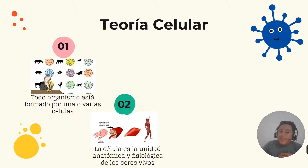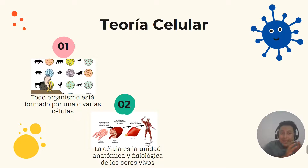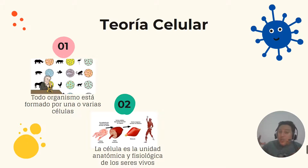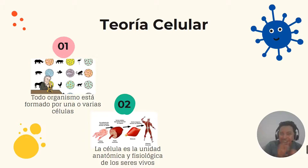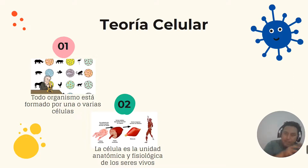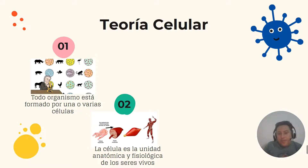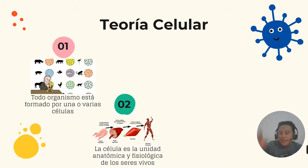El segundo punto dice que la célula es la unidad anatómica y fisiológica de los seres vivos. La célula va a ser la expresión tanto anatómica como fisiológica de nuestros órganos. Por ejemplo, el hepatocito o célula hepática: lo que secrete este hepatocito va a definir en gran manera un hígado, y sus características se van a expresar en la forma y características de un hígado. De esa forma, al igual que un ladrillo, la célula es la unidad básica de un organismo.